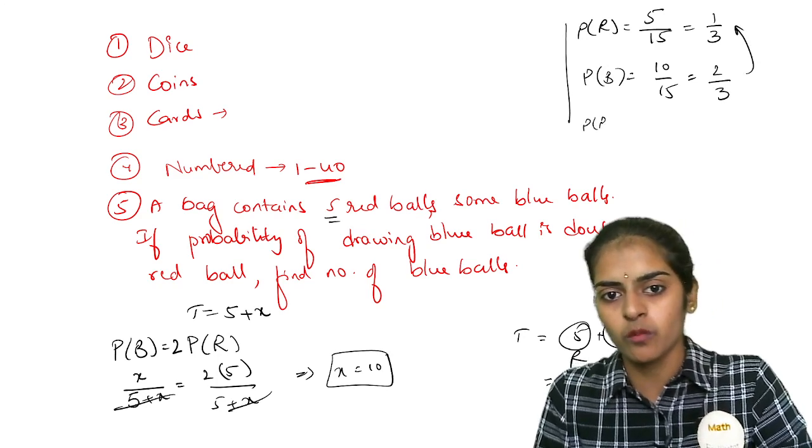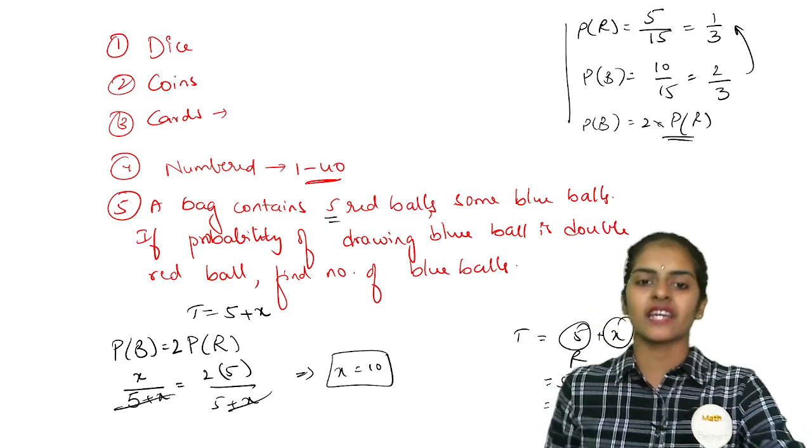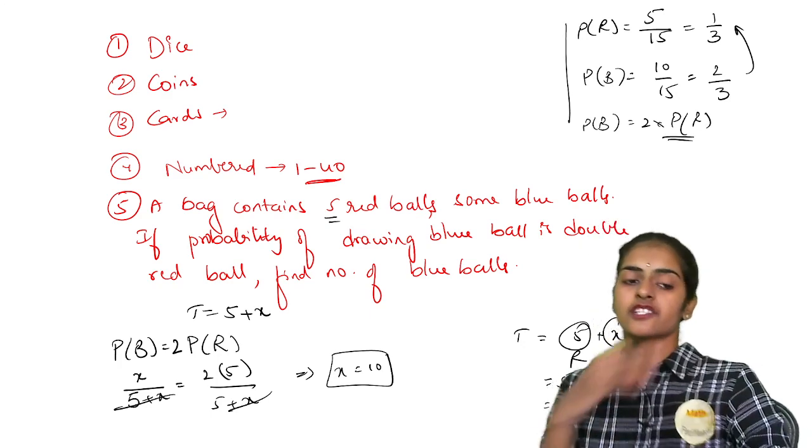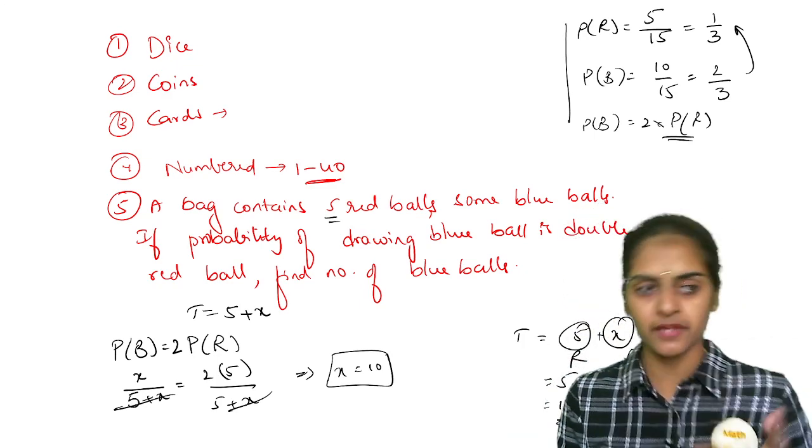You can see here probability of blue ball is 2 times probability of the red ball. Hence the answer you got is correct. These model questions also you can expect. There are 5 things in this chapter.